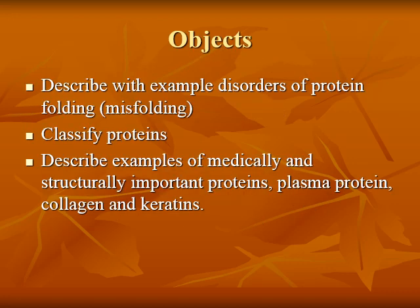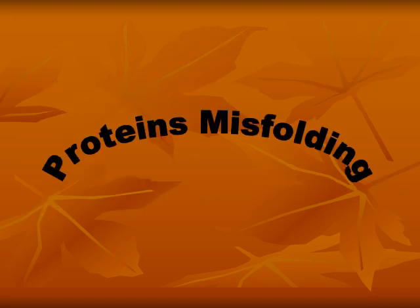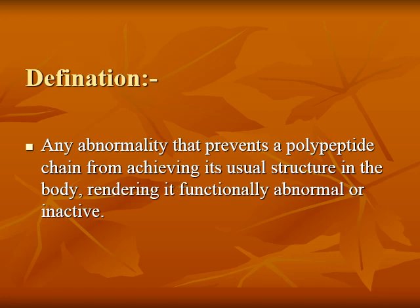The first objective is a description of protein misfolding. This order of protein folding is called misfolding. Protein misfolding refers to any abnormality that prevents a polypeptide chain from achieving its usual structure in the body, rendering it abnormal or inactive.